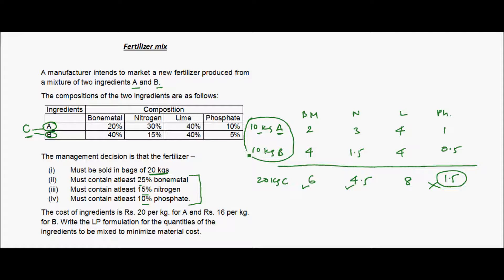We must formulate this into an LP model so that all conditions are met. At the same time, since A costs rupees 20 per kg and B costs rupees 16 per kg, the LP formulation should minimize the total cost of the 20 kg bag.